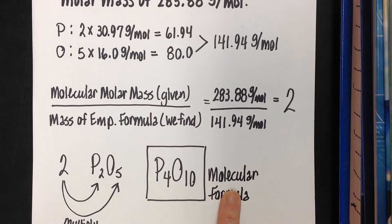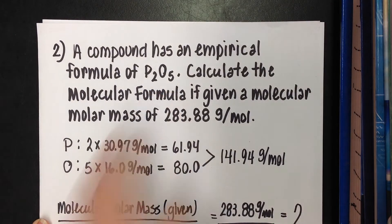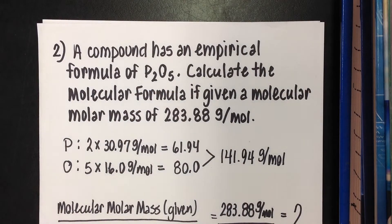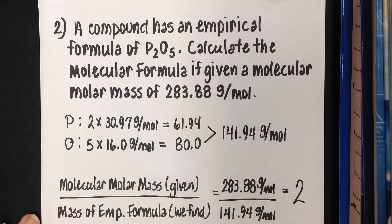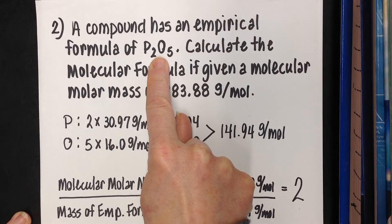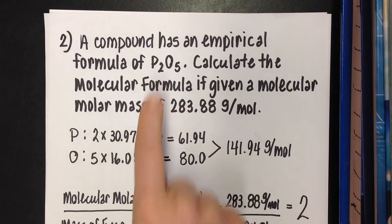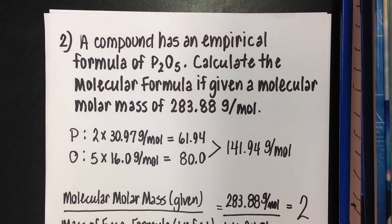Think of the molecular formula as the multiple of the empirical formula. In a nutshell: divide the experimental or molecular molar mass they give you by the mass of the empirical formula that you find yourself. You'll get a small whole number — take that number and multiply it by all the subscripts in the empirical formula. That's it.